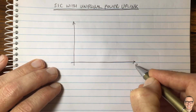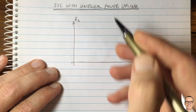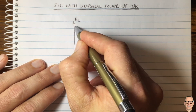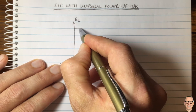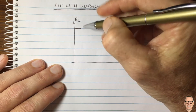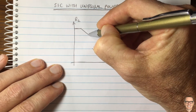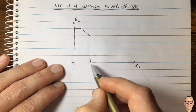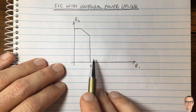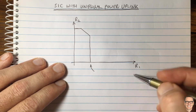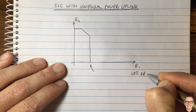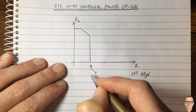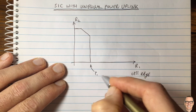Here's our rate region with Rate 1 and Rate 2. We consider two users and the rate for each of those two users. Let's draw our typical rate region if we had a lot of power coming from user 2. For example, this is the rate you can get from the power from user 1, and maybe this user is far at the cell edge, so it's being received with a small power P1.